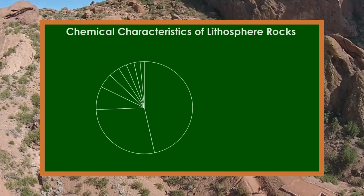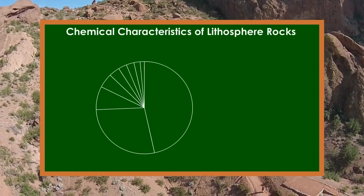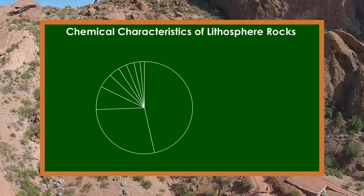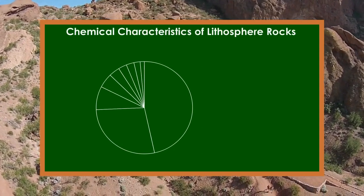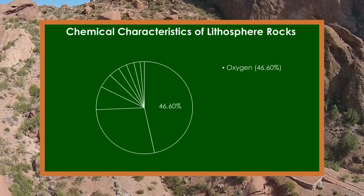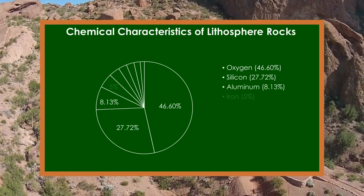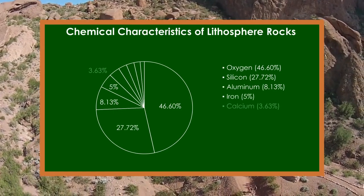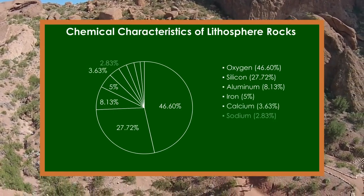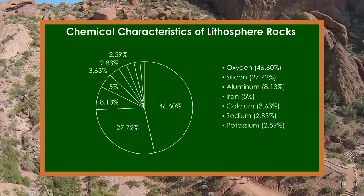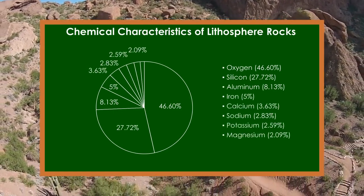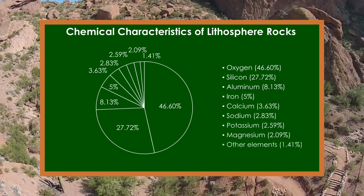The chemical composition of the rocks that make up the Lithosphere includes oxygen, silicon, aluminium, iron, calcium, sodium, potassium, magnesium, and some other elements.